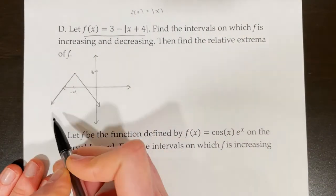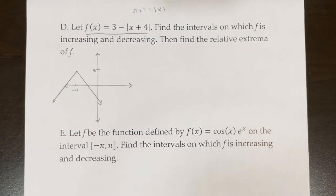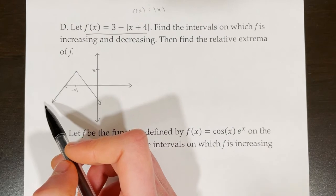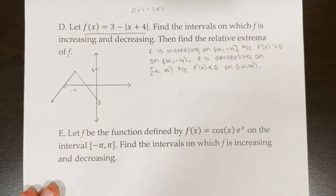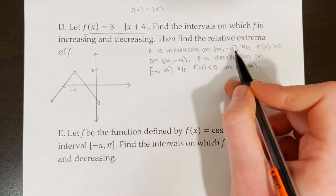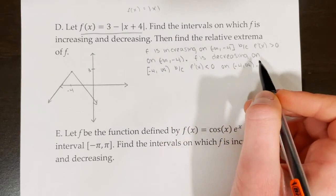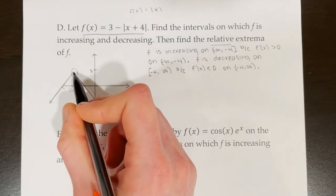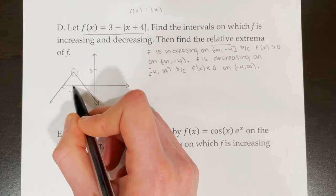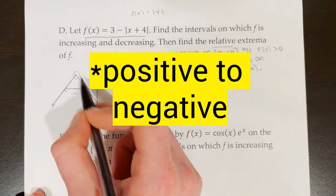The intervals on which it is increasing and decreasing: it's going to be increasing on the interval from negative infinity to negative 4, and decreasing on the interval from negative 4 to infinity. Since I need a proper justification, I'll still state it's increasing on the closed interval because f prime of x is greater than 0 on the open interval, and decreasing on the closed interval because f prime of x is less than 0 on the open interval. The function has a relative maximum at x equals negative 4 — specifically at the point negative 4 comma 3 — because that is a critical number and f prime of x changes from positive to negative at that location.